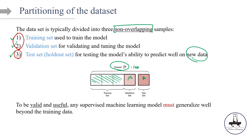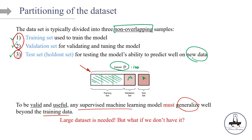To be valid and useful, any supervised machine learning model must generalize — it must generalize well beyond the training data. We need to make sure that our model is performing well on something it hasn't seen before. As you can see, we need to divide the data into three parts, which suggests that in machine learning, we need to have basically large data sets. But what if we don't have a large data set? Let's see what we can do with that.